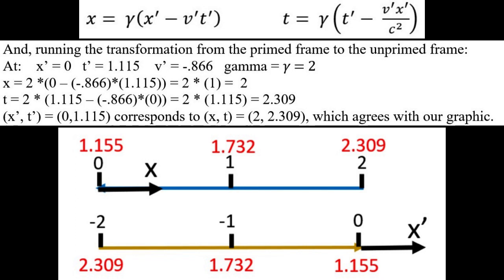Running from the prime frame to the unprime frame with those two equations, I see that at x prime equals 0, t prime equals 1.115, now the v prime is minus 0.866. Plug into these other equations and we find that x prime t prime of 0, 1.115 corresponds to x t of 2, 2.309, which again agrees with our graphic.